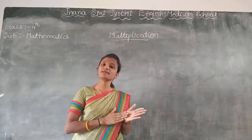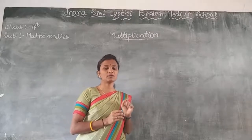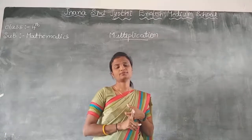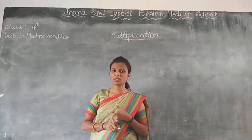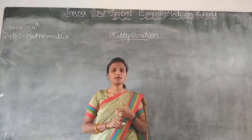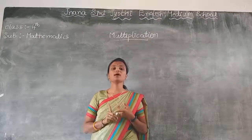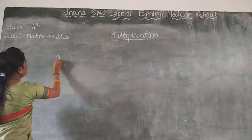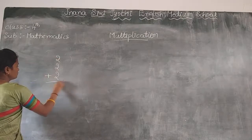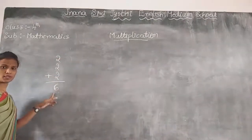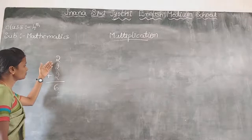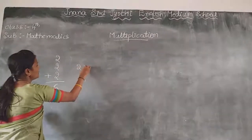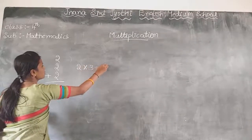Now you have to answer me: what do you mean by Multiplication? Multiplication is the shorter way of Addition. For example, 2 plus 2 plus 2 gives you the sum 6. Instead of writing 2 plus 2 plus 2, you simply write it as 2 into 3 equals to 6.